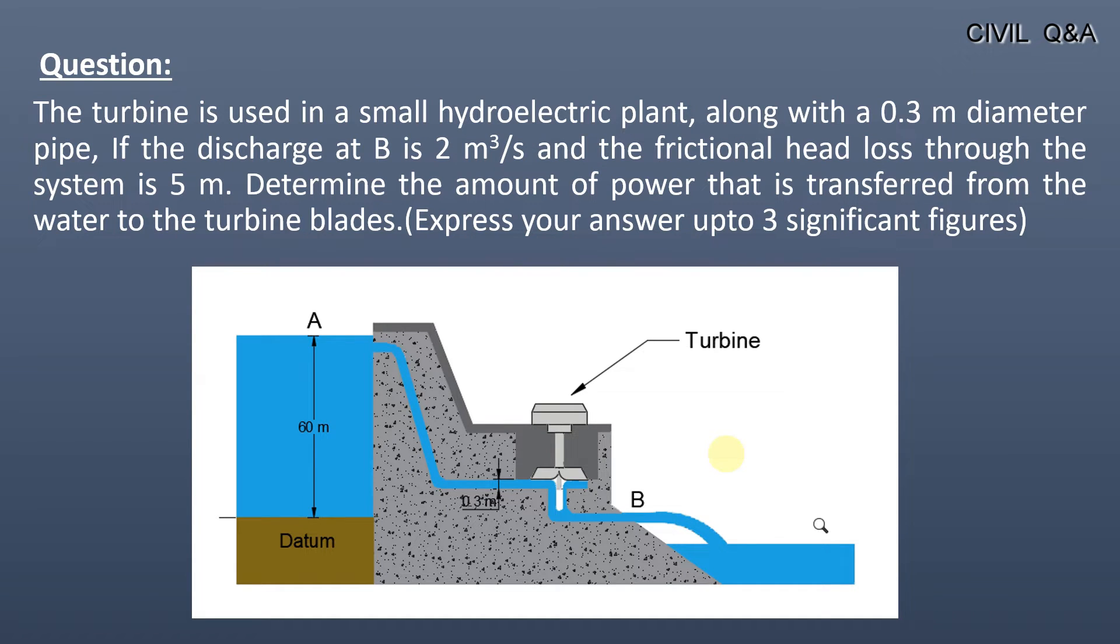This question is about the application of Bernoulli's theorem. The question shown above states that the turbine is used in a small hydroelectric plant along with a 0.3 meter diameter pipe.